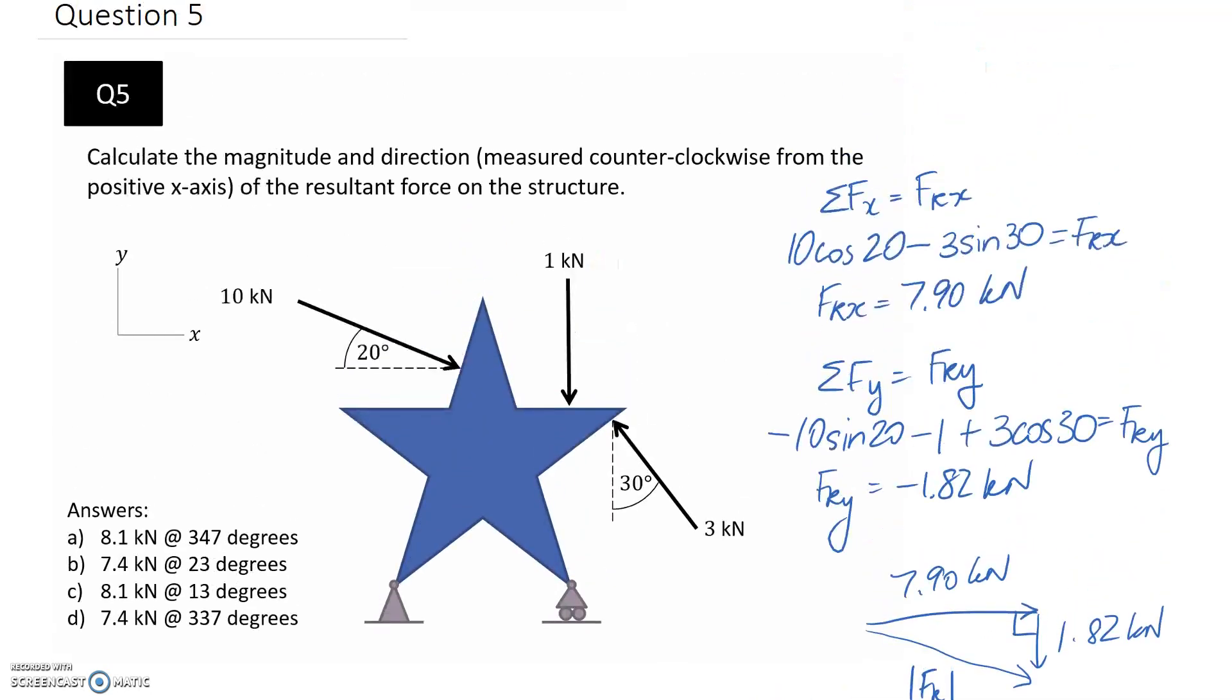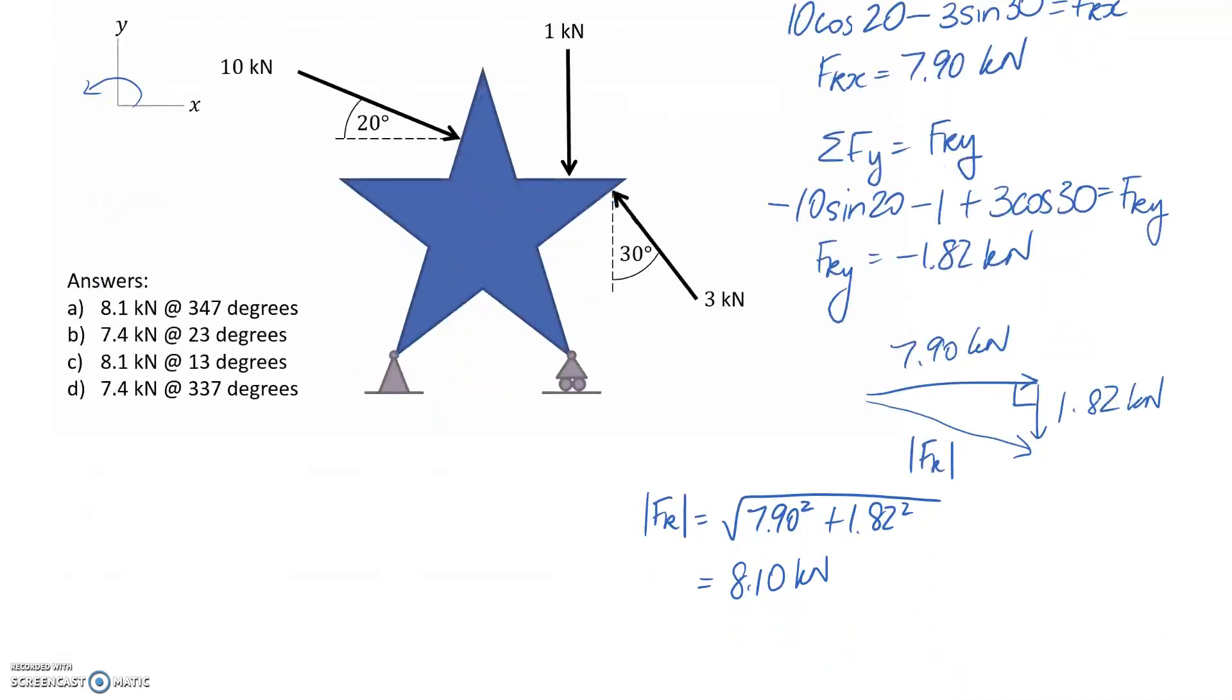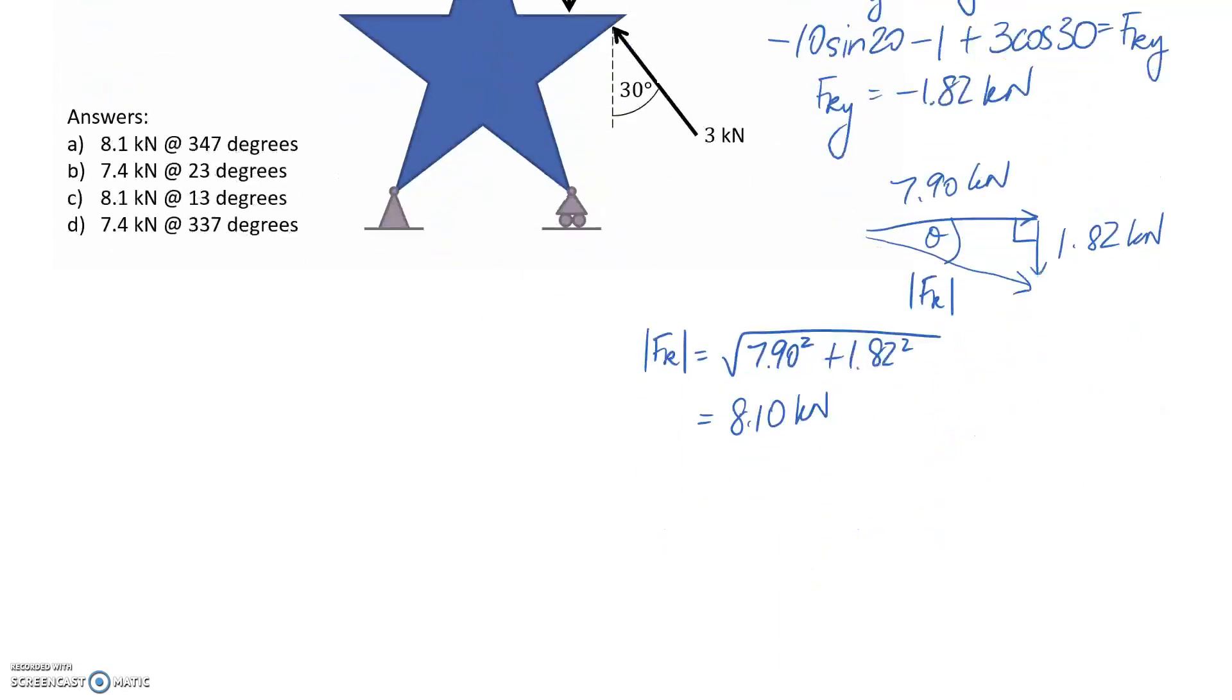So the trick here is that it's telling us to measure counterclockwise from the positive x-axis. So if this is the positive x-axis, counterclockwise is this way. So that's the direction we need to measure the angle from. So let's first get the angle off this triangle here. So I'm going to get this angle in here, which we call theta.